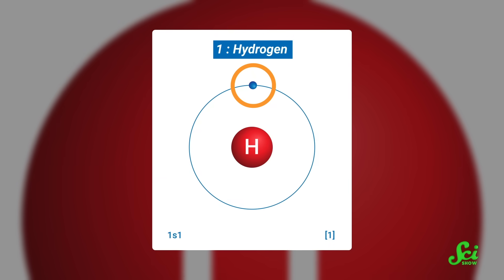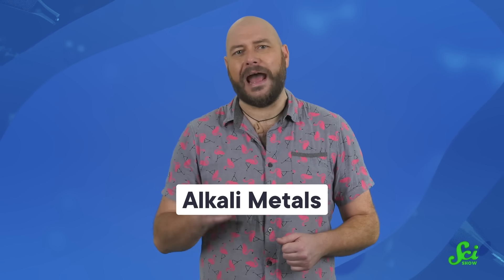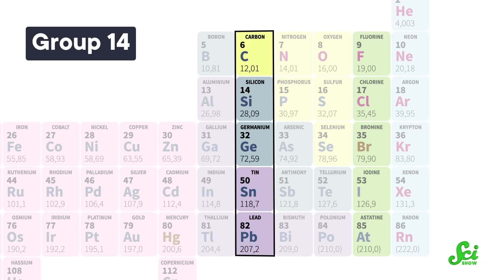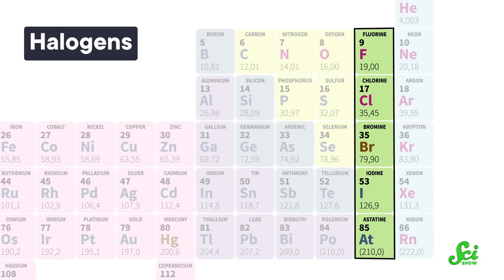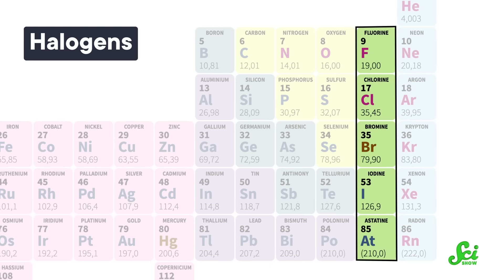Which makes it really annoying that the very simplest element flouts these periodic rules. It both does and doesn't act like at least three different groups, and doesn't really fit in with any of them. Hydrogen has one lone electron in a shell that has room for a total of two. That makes it resemble the alkali metals like lithium and sodium, because they all have a lone outer electron — but also like group 14, which starts with carbon, which have their outer shell half full. But also the halogens, starting with fluorine, because they have room for one more electron.